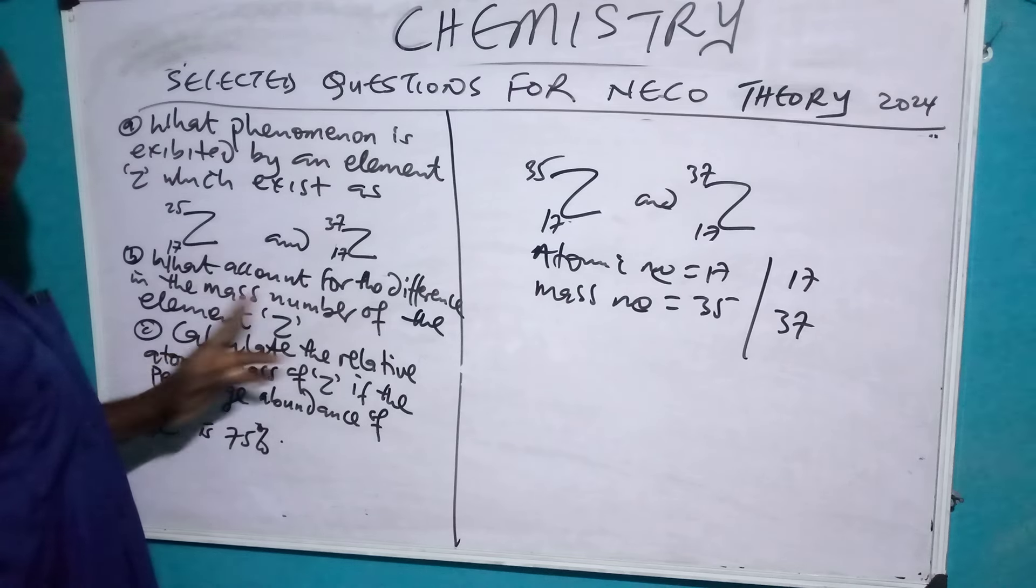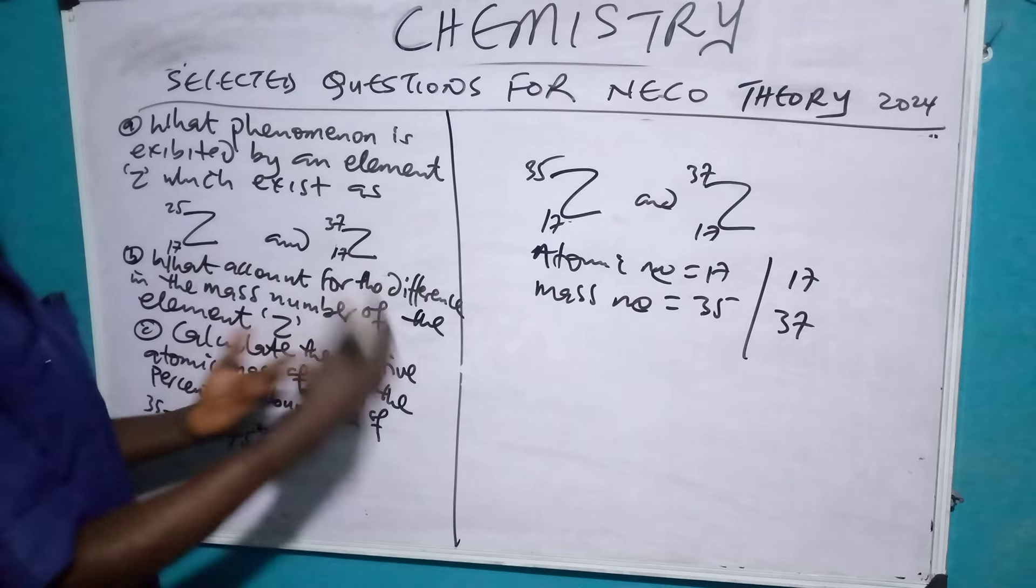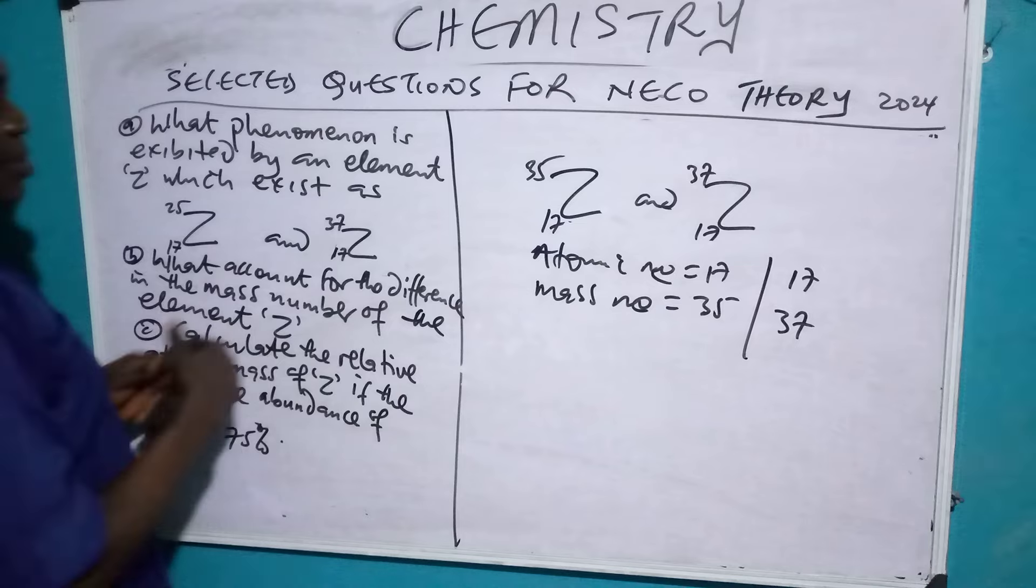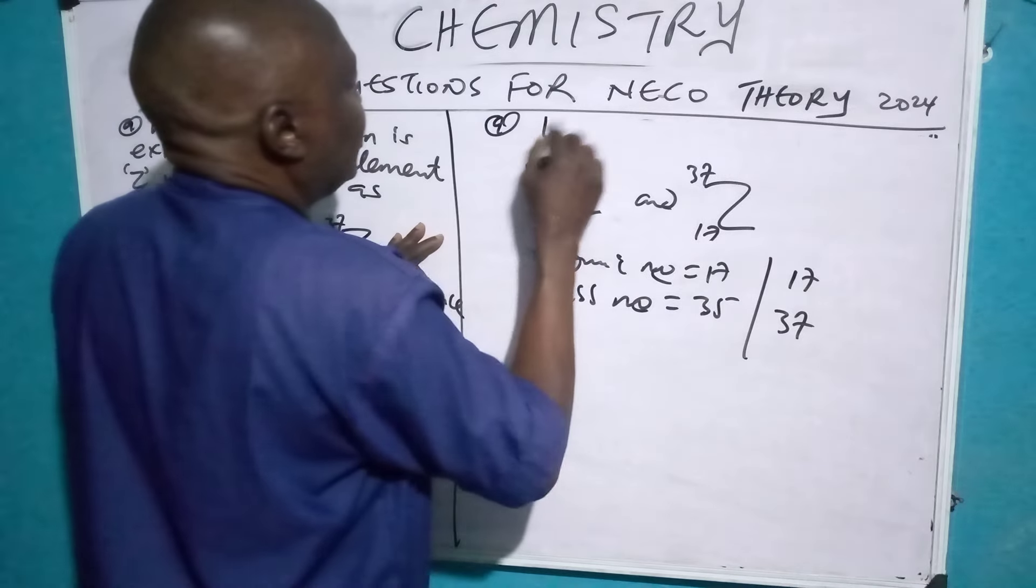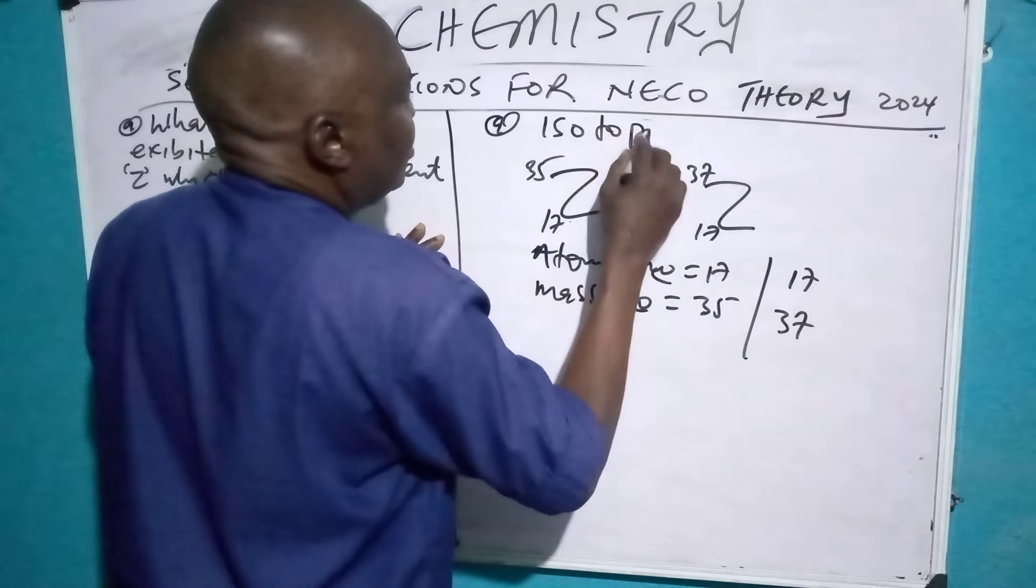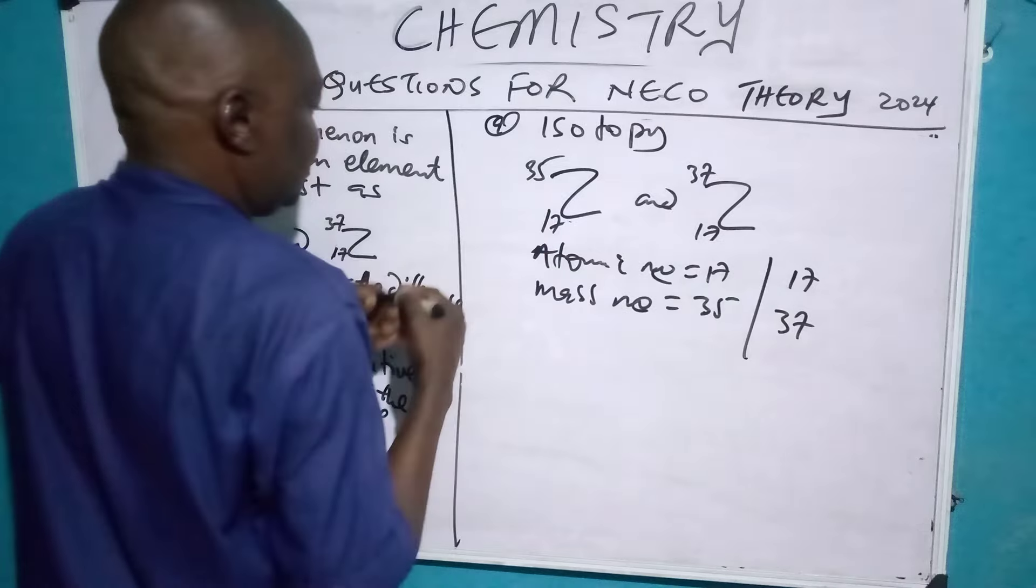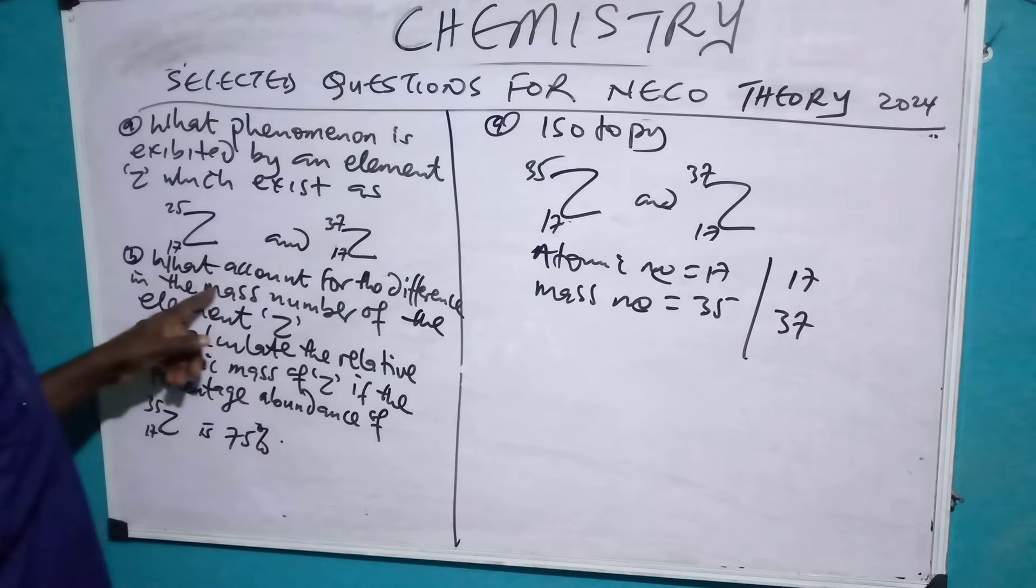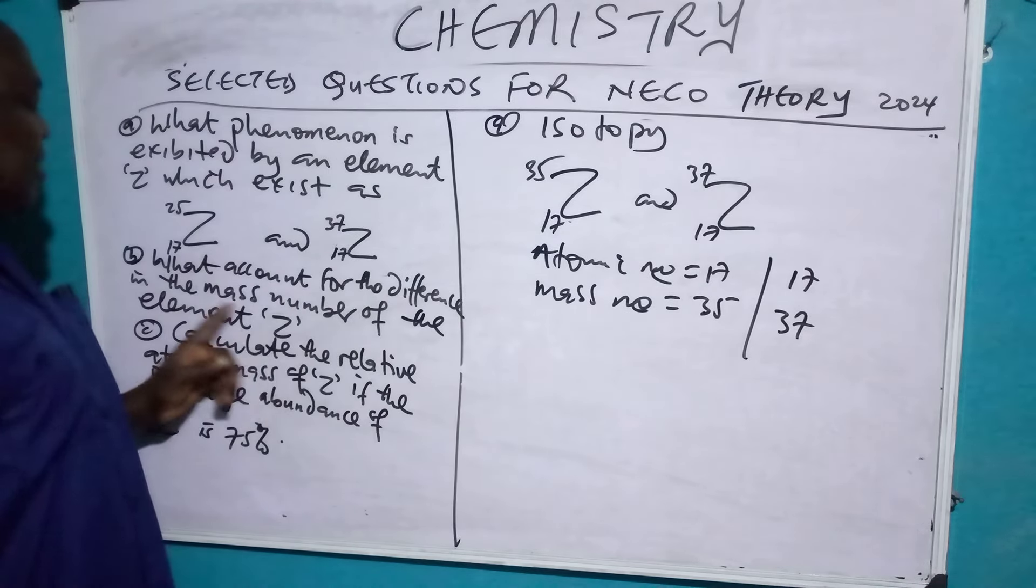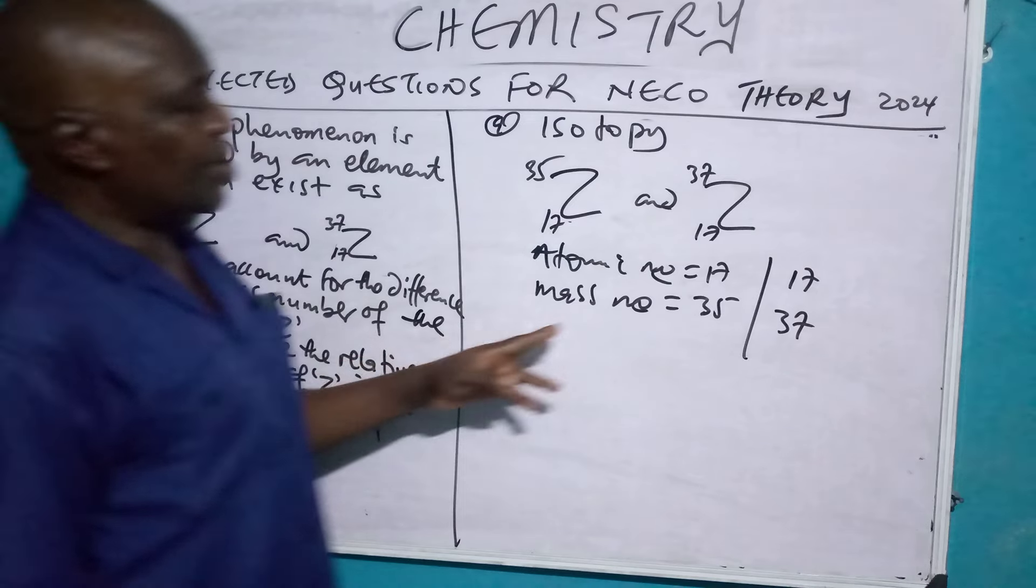What account for the difference in the mass number? That is just the first answer. Isotope. A. Isotope. B. What account for the difference in the mass number of the element Z? You see, these are different mass numbers.